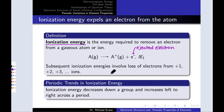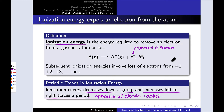Now, periodic trends in ionization energy: how do they change as we move across the periodic table? Down a group, ionization energy decreases — gets less endothermic. Left to right across a period, ionization energy increases, becomes more endothermic. One thing to note is that this is a trend opposite to atomic radii, which increase moving down a group and decrease moving left to right. The fact that these are reversed is not a coincidence — they're both driven by the same underlying phenomenon.